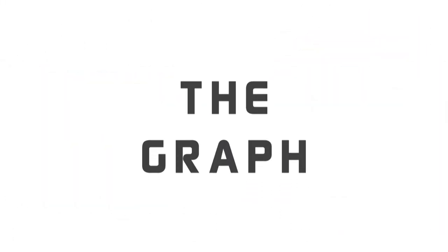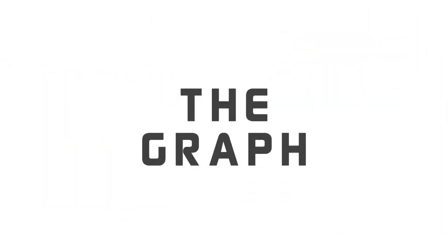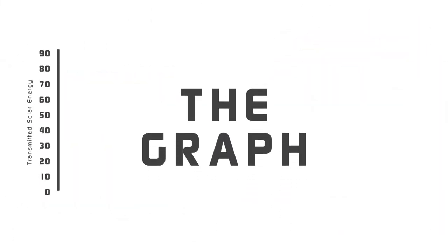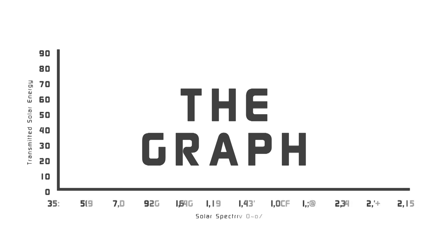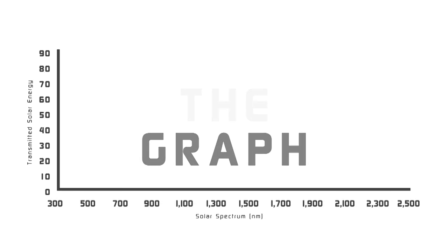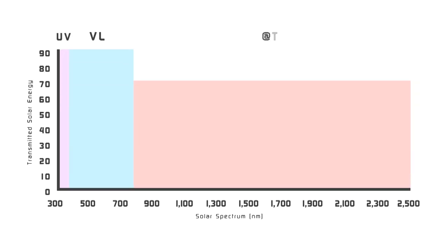Introducing the graph. On the y-axis, we have transmitted solar energy. On the x-axis, we have the solar spectrum. It starts with ultraviolet, goes to visible light, then to near-infrared radiation.